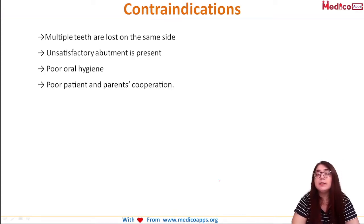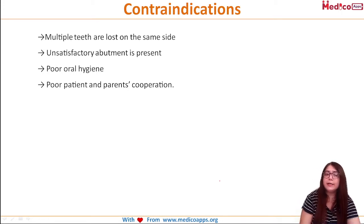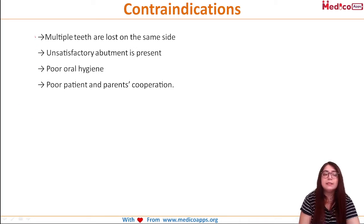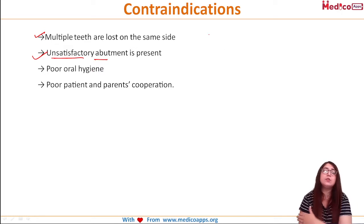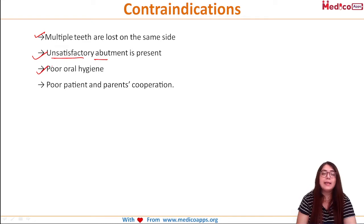There are certain contraindications for the use of the distal shoe space maintainer. The absolute contraindications are: when multiple teeth are lost on the same site; when an unsatisfactory abutment is present — that is, the tooth with which you need to place the crown is not sound enough; poor oral hygiene, as it can lead to caries; and poor patient and parental cooperation.